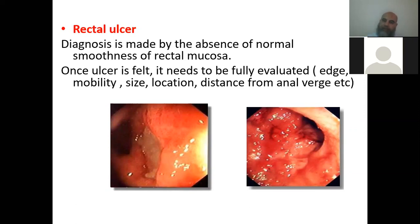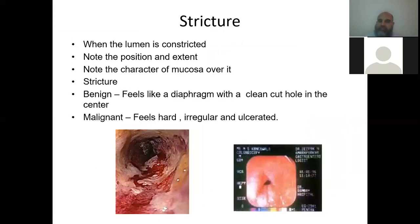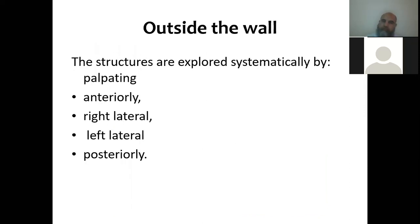Polyps are soft, round growths that slip under the finger like small balls; they may be single or multiple. Strictures are narrowings of the anorectal region which may be due to benign or malignant disorders.